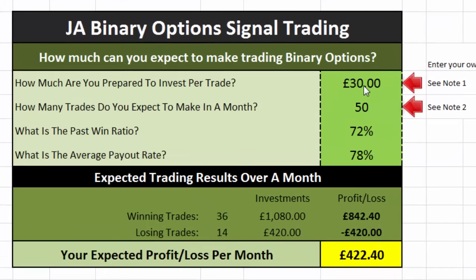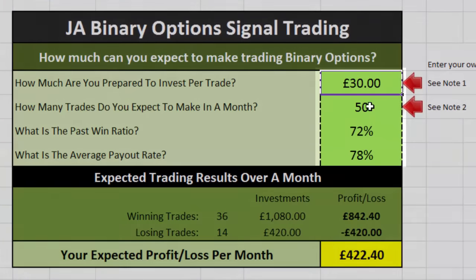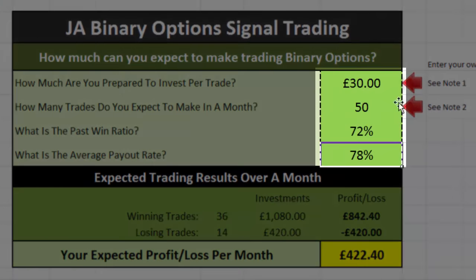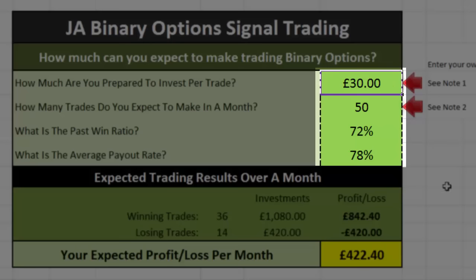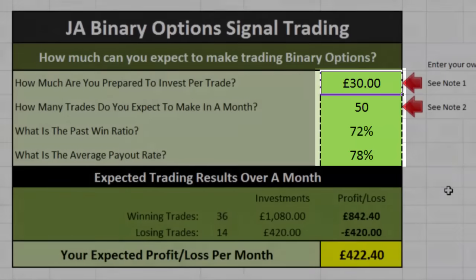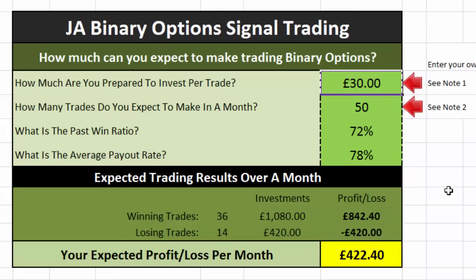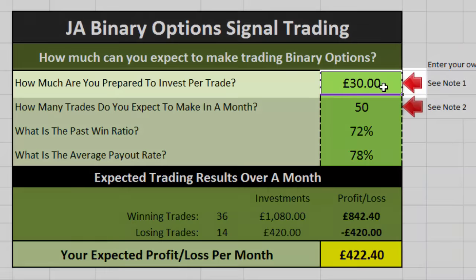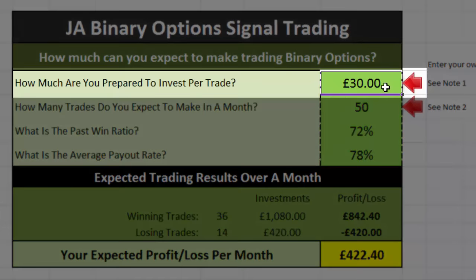Now there are four boxes here — G4, G5, G6, and G7 — where you can enter whichever value you want. G6 and G7 probably don't want changing because they're pretty well set. However, how much are you prepared to invest per trade? That is a figure which can be very specific to your own personal circumstances.